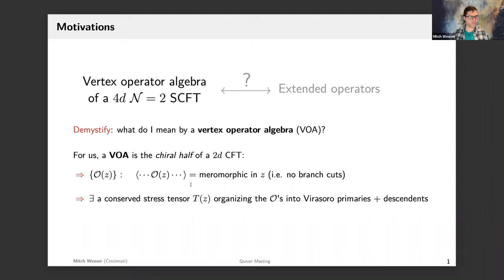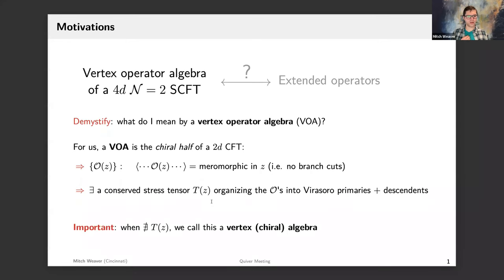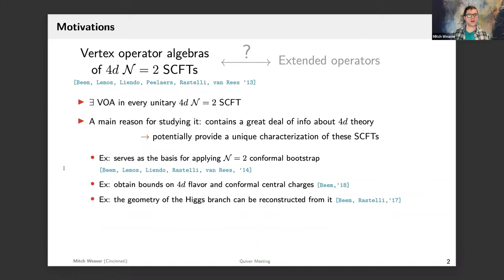Let me start by demystifying what I mean by a vertex operator algebra. Whenever you hear me say VOA, take it to correspond to the chiral half of a 2d CFT — meaning there's a collection of local operators labeled by a z insertion point, and their correlation functions are always meromorphic in z, with no branch cuts. The second condition involves a conserved 2d stress tensor T, which organizes all local operators into Virasoro primaries and descendants. When we don't have this stress tensor we call the structure just a vertex algebra, also known as a chiral algebra.